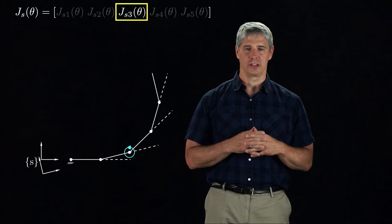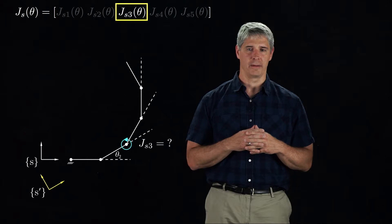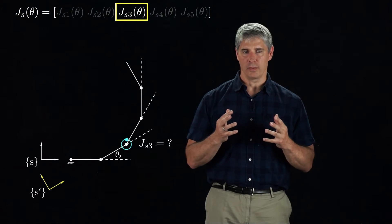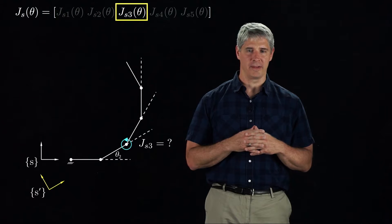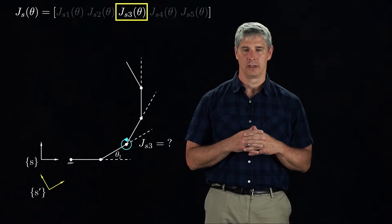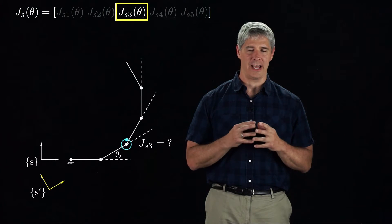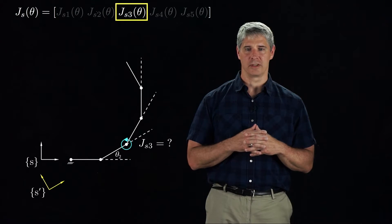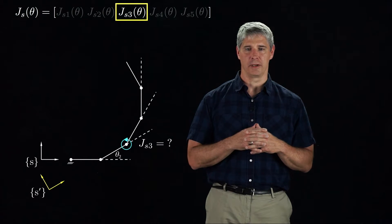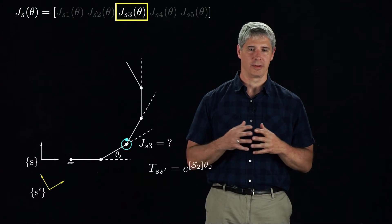Now we rotate joint 2 by theta 2. Now we see that the configuration of joint 3 has moved relative to the S-frame, so Js3 must change. But we've drawn a new frame, S-prime, that has the same relationship to joint 3 that the frame S had to joint 3 before joint 2 moved. Therefore, the twist due to a unit velocity at joint 3 in the S-prime frame is just S3, the spatial screw axis when the robot was at its zero configuration. The configuration of S-prime in the S-frame can be written as e to the bracket S2, theta 2 — the displacement achieved by the S-frame by following the screw axis of joint 2 by an angle theta 2.